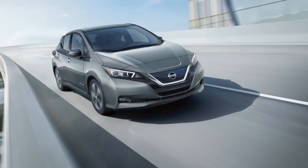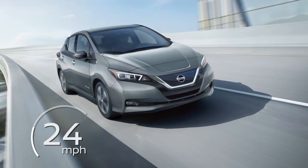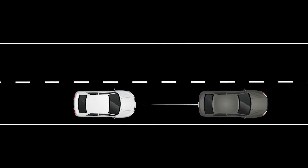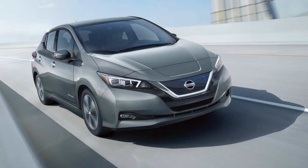When traffic is clear, the ICC will maintain a set speed between 20 and 90 miles per hour. If the vehicle detects a slower moving vehicle ahead, the ICC will lower your speed to match the slower vehicle. Once the road is clear again, the ICC will resume your set speed.